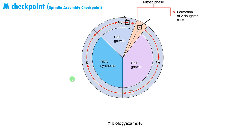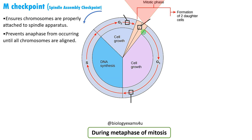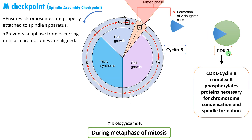The final checkpoint is the M checkpoint, also called the spindle assembly checkpoint. This occurs during metaphase of mitosis. This checkpoint ensures chromosomes are properly attached to the spindle apparatus and prevents anaphase from occurring until all chromosomes are properly aligned at the metaphase plate. The cyclins involved are cyclin B and CDK1. Cyclin B continues to be active during mitosis, maintaining its association with CDK1. The cyclin B-CDK1 complex ensures all components required for mitosis are in place and phosphorylates proteins necessary for chromosome condensation and spindle formation.